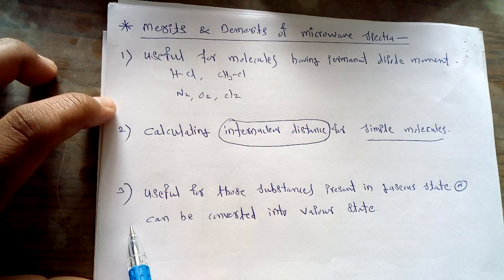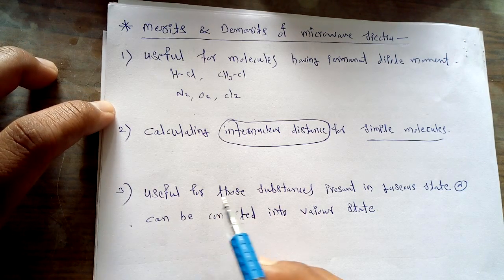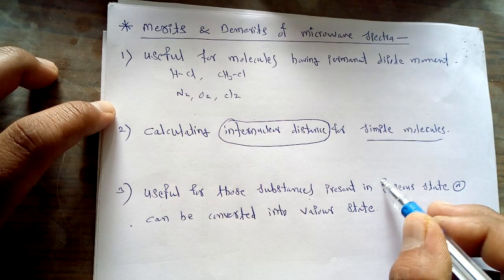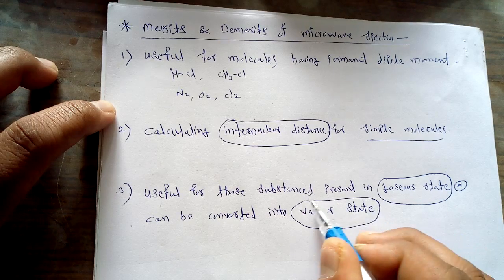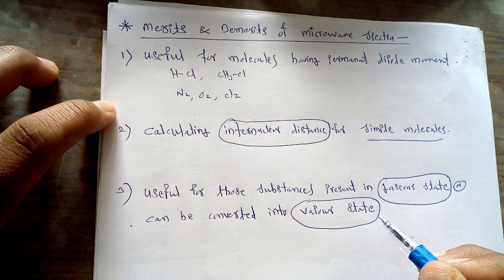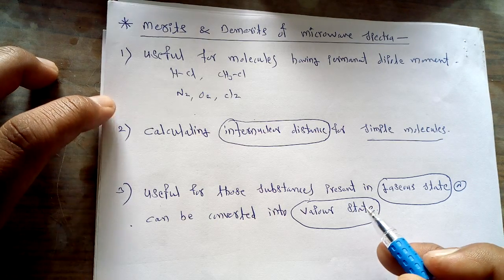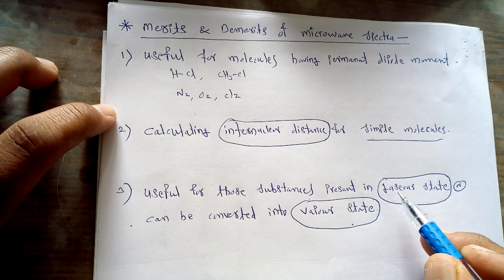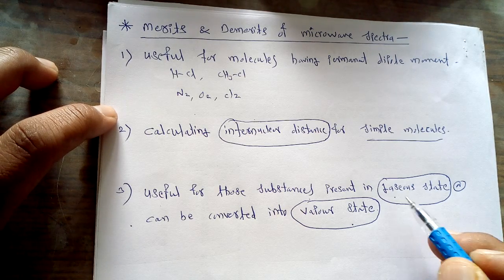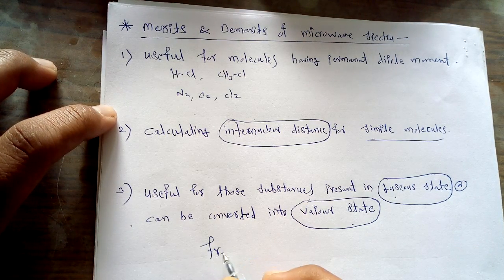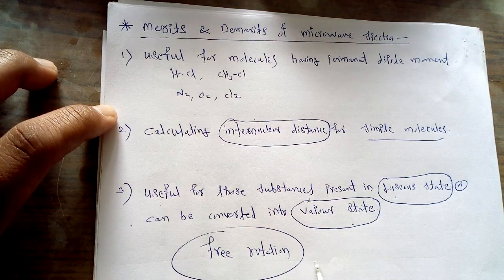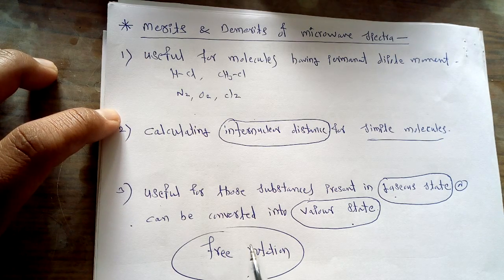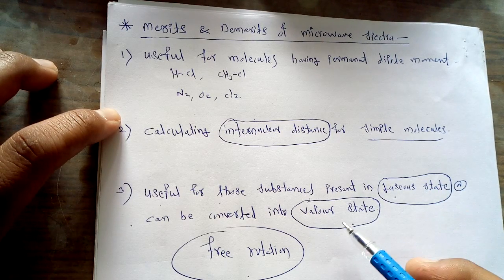The last important merit of microwave spectroscopy is that it is useful for substances present in a gaseous state. If your compound is in a gaseous state or can be converted into the vapor state, then only can we study it by microwave spectroscopy. This is because a molecule in the gaseous state has free rotation around its axis, and due to this free rotation we can study its rotational motion.